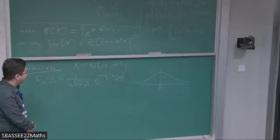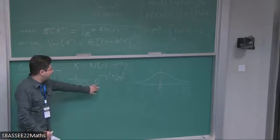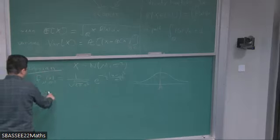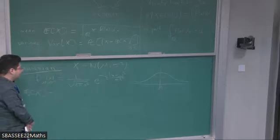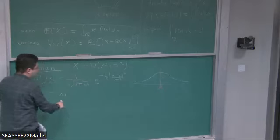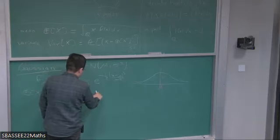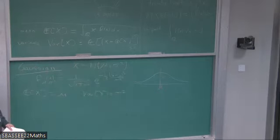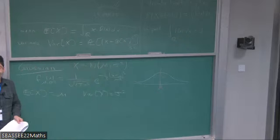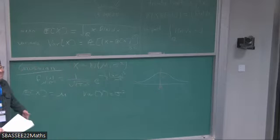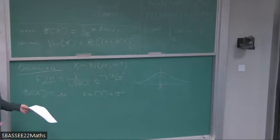It's a nice exercise to show that this f is really a density function — one has to show that the integral over all of ℝ is one. This is typically done in analysis when studying polar coordinates, as an application of multivariate calculus. One can prove that the expectation of X is precisely μ, and the variance is σ² — so these parameters are correctly named.